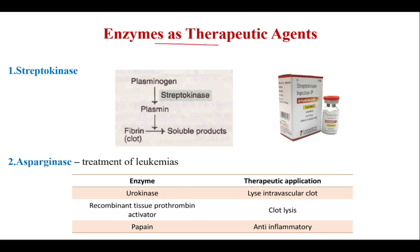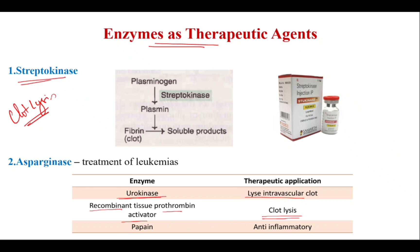Enzymes as therapeutic agents: first, streptokinase, which is used in clot lysis. Urokinase is also used to lyse intravascular clots. Recombinant tissue prothrombin activator is also used to lyse the clot. Plasminogen is converted to plasmin in the presence of streptokinase, which in turn dissolves the fibrin clot into soluble products — that is how it is used as a clot lysis.